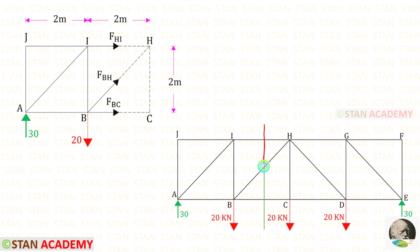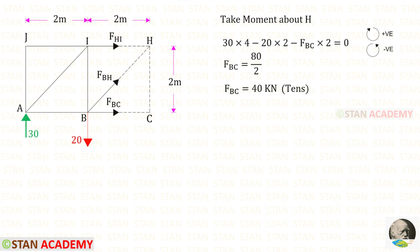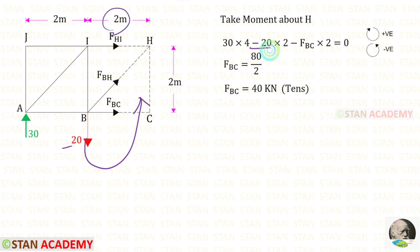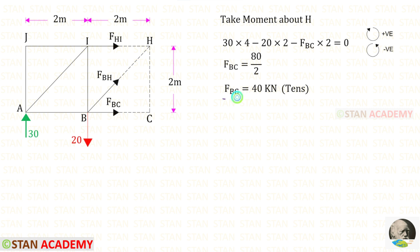Now I am going to make the fourth section and take the left side portion for analysis. Taking moment about H, we should not consider FHI or FBH. The remaining forces are 30, 20, and FBC. 30 is clockwise so positive with a distance of 4. 20 is clockwise with a distance of 2. FBC is anticlockwise so negative with a distance of 2. For FBC we get a positive value, meaning it is tensile.